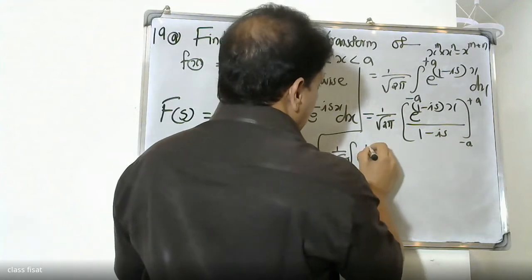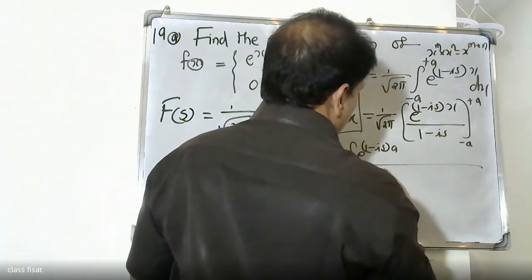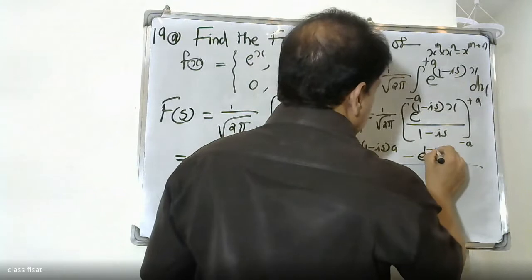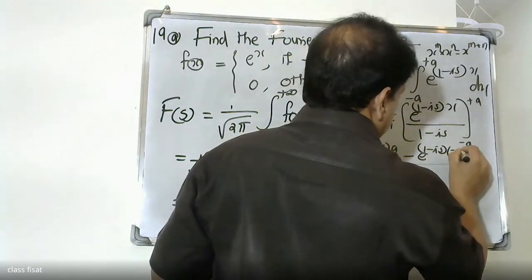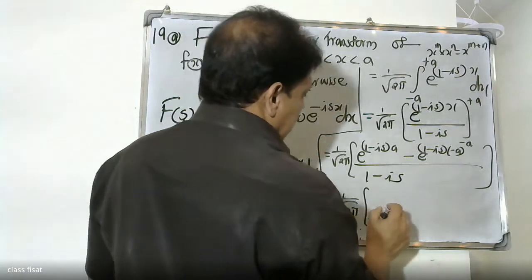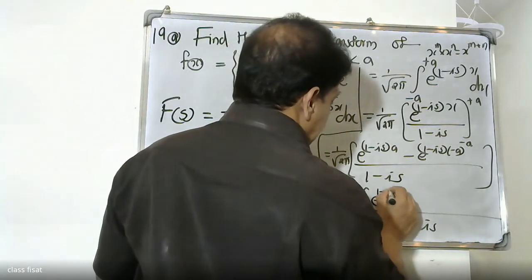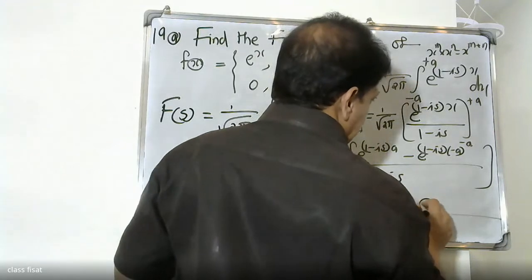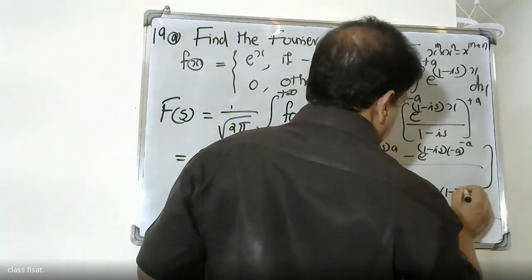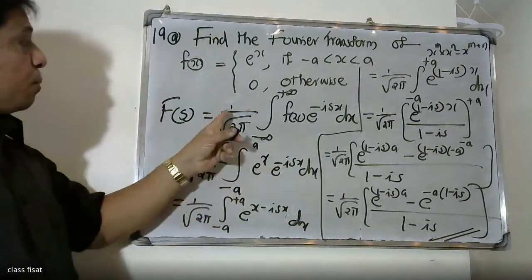Evaluating from the lower limit minus a to the upper limit plus a, we get (1/√2π) times: e^{(1-is)a} divided by (1-is), minus e^{-(1-is)a} divided by (1-is). That is the final answer for the Fourier transform of this function.